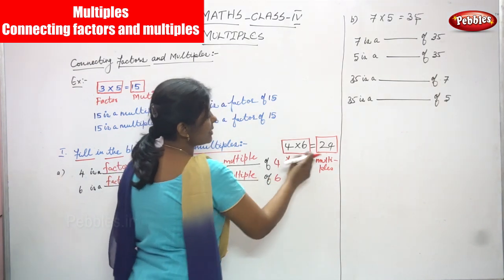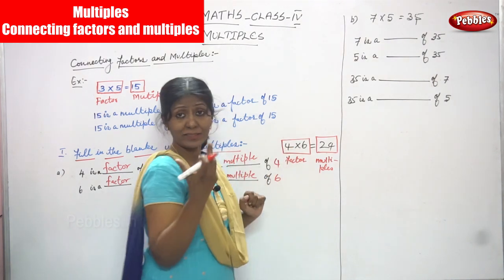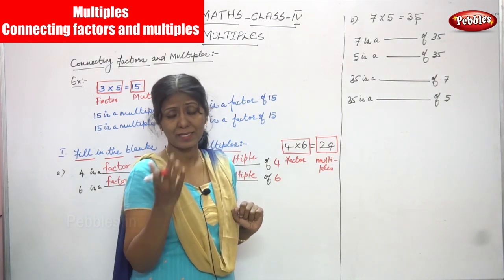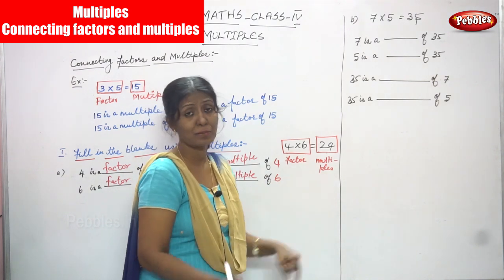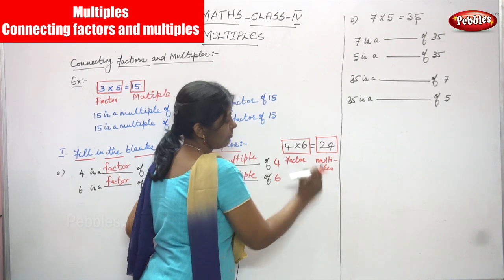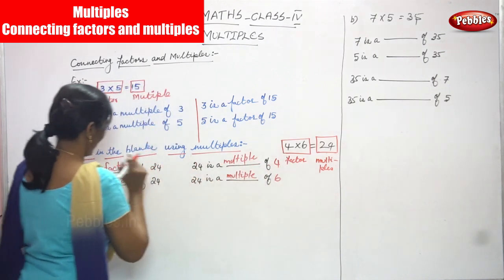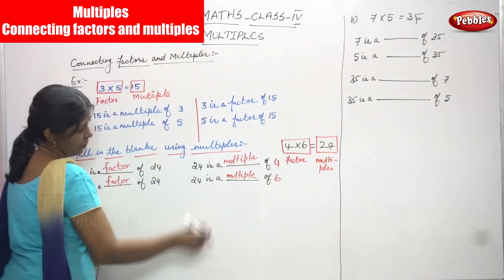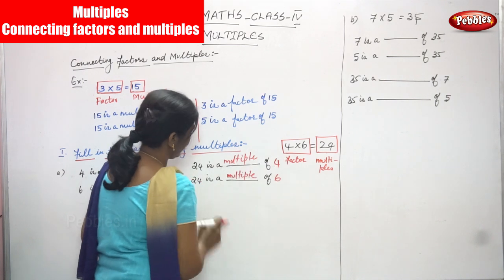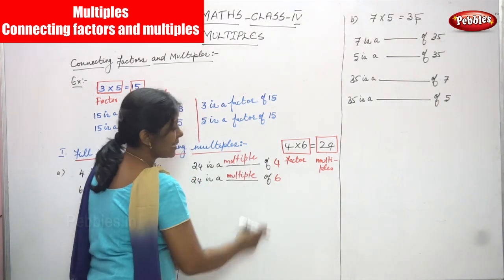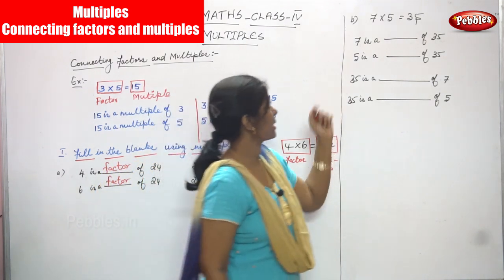So 4 into 6 — these two numbers are multiplied, so they are factors. The result, which is the product, is called a multiple. So 4 is a factor of 24, 6 is a factor of 24, 24 is a multiple of 4, and 24 is a multiple of 6. Now we move on to the next sum.